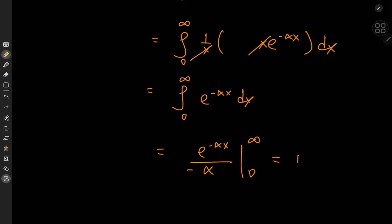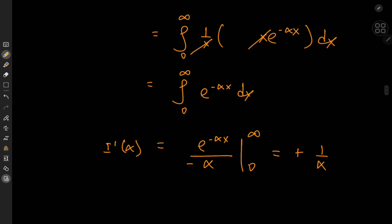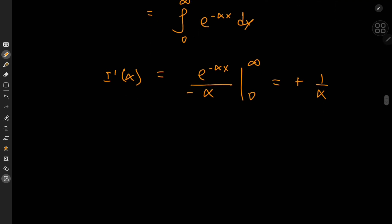Two negatives cancel out. E to the 0 is 1, so we have 1 over alpha. That's the derivative of I with respect to alpha, completely in terms of the alpha parameter.